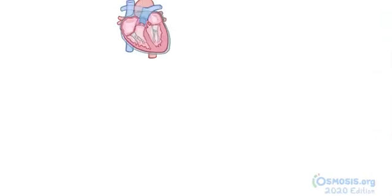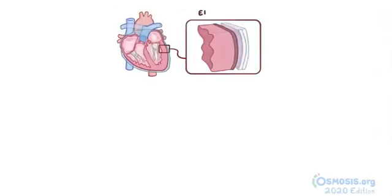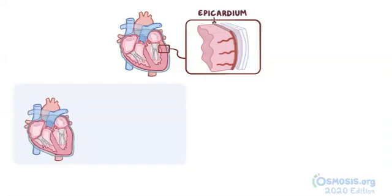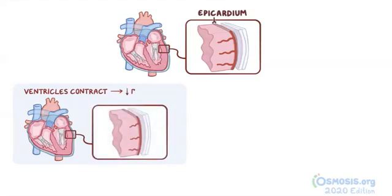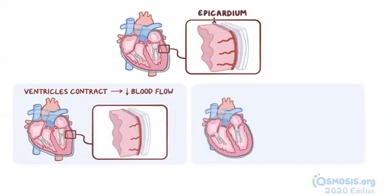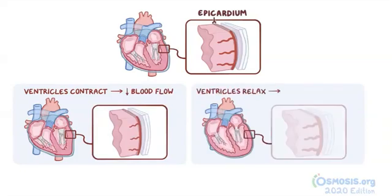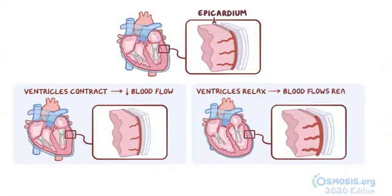The coronary arteries and their main branches lie in the epicardium, the outer layer of the heart wall, and send branches inward to supply the myocardium. When the ventricles contract during systole, they compress the coronary circulation, causing a brief period of occlusion and reduced blood flow. On the other hand, during diastole when the ventricles relax, the compression is relieved and blood flows readily.